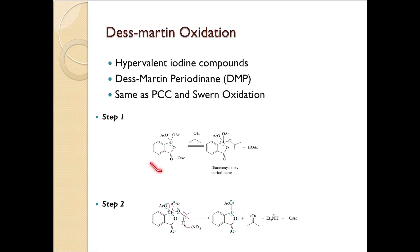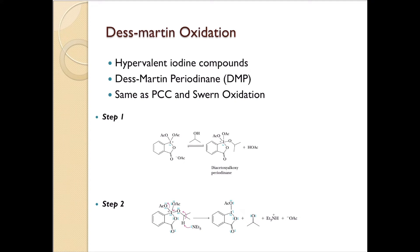Here is the structure of DMP. When you say hypervalent, it's going to have a greater electron count than what is predicted by the octet rule. It's going to work in the same way as PCC or Swern oxidation, where a primary alcohol is going to get converted into an aldehyde and a secondary alcohol is going to get converted into a ketone.